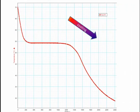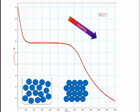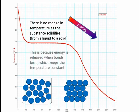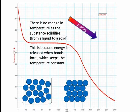Now if we look back at the cooling curve, we can apply the same logic. The flat bit of the graph occurs at the change of state, when changing from a liquid to a solid. There is no change in temperature as the substance solidifies, even though it's still well above room temperature. This happens because energy is released when the bonds form, which keeps the temperature constant.